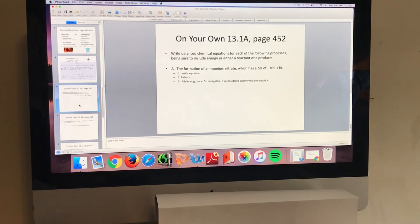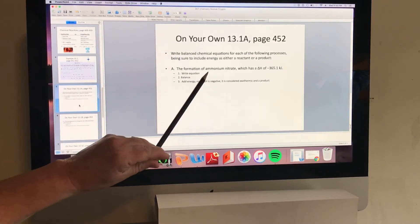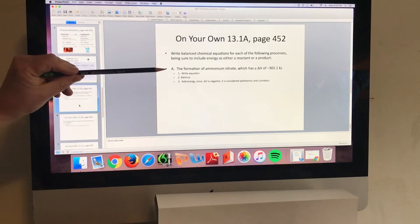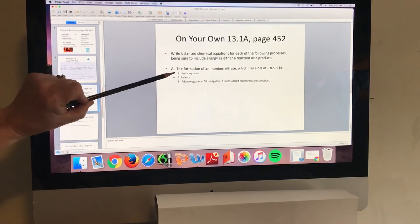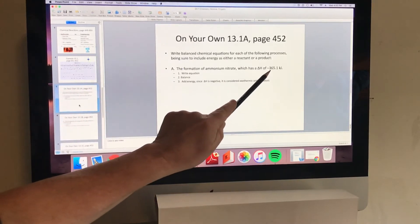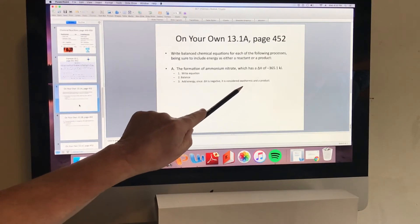Let's move now on to page 452. We have on your own. This particular on your own has three parts, an A, a B, and a C. In this slide, I'm just doing the A, the first one. It says write a balanced chemical equation for the following processes. And it says to be sure to include energy as a reactant or product. It says the formation of ammonium nitrate has a delta H of negative 365.1 kilojoules. So I'm following these three steps here. Writing an equation. We're going to balance it. And then we'll add the energy. We already know the energy is negative. So it's going to be considered an exothermic reaction. And the energy will be put on as a product.